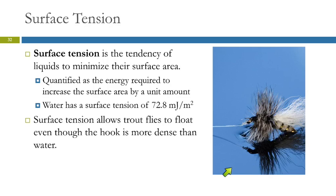Here's a trout fly floating on the water — you can see how it's distorting the surface. If you just look at densities, this trout fly should sink because it has a metal hook in it, and metal is more dense than water. There are also water bugs that skate on the surface; they should sink too, but they don't. It almost seems like there's a skin on top of the water. That's the surface tension — water does not want to increase its surface area, and so it resists that. There's a limit to how much it can resist, though.